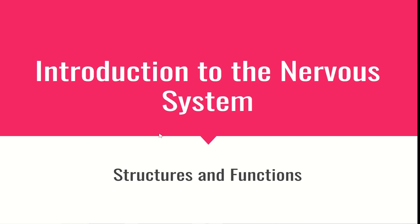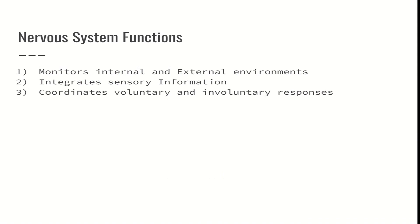Welcome to the nervous system unit. We are going to start with functions and structures of the nervous system. There are three main functions of the nervous system: to monitor internal and external environments. Monitoring the internal environment is basically making sure that we're maintaining homeostasis. Monitoring the external environment is making sure that the body is in a safe location.